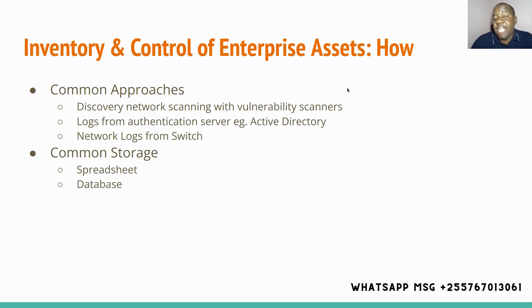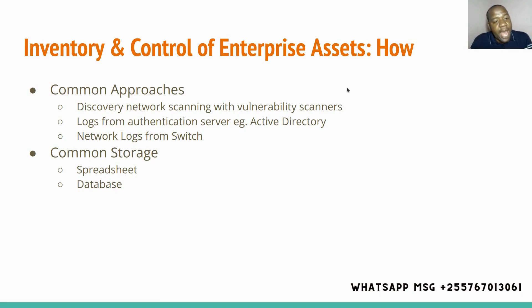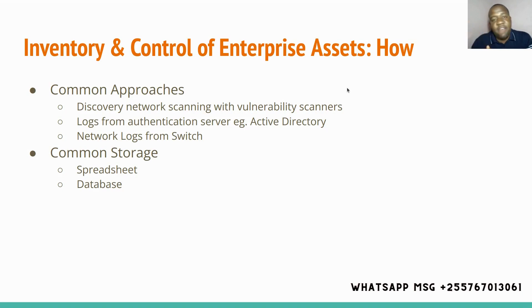Another source one can use is the logs from the authentication server. For those organizational people that use Active Directory, it is possible to know through Active Directory what particular hardware have been connected to a given organization. That is one way to have this kind of inventory, because inventory is simply a list — and here we are specifically concerned about the list of hardware connected to our IT infrastructure. Another way to detect this list of hardware is through the use of network logs from switches, because every device connected to your network will send packets to the switch.